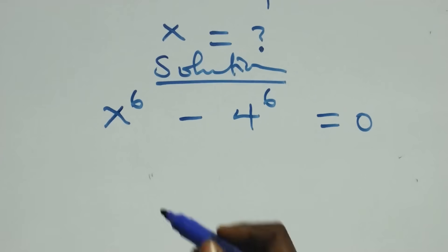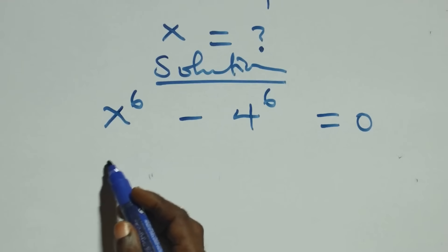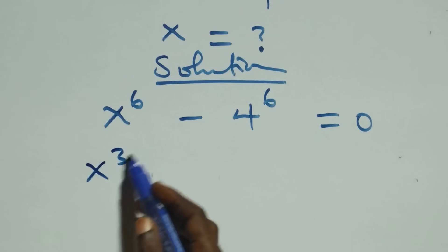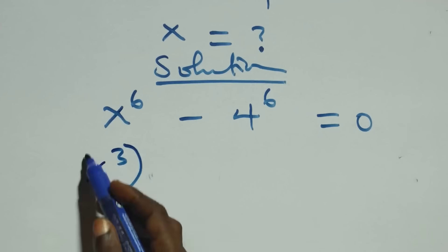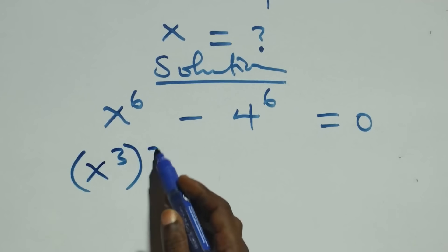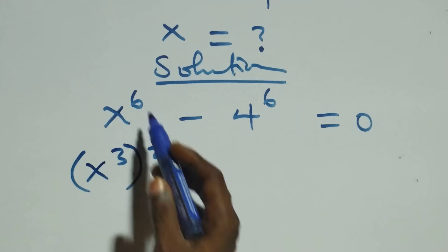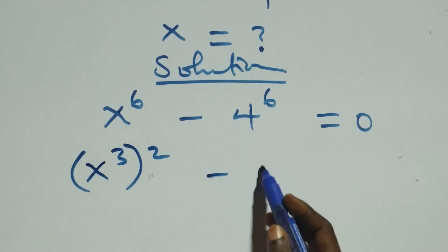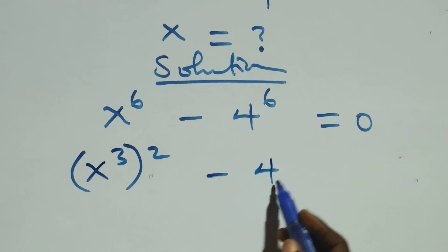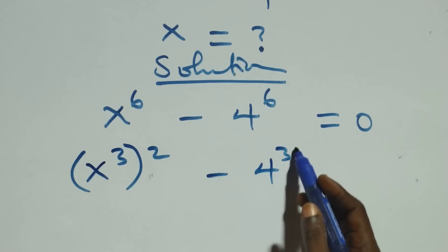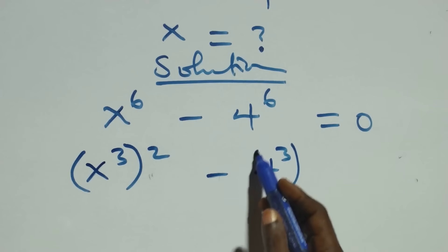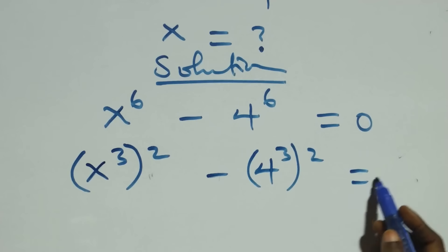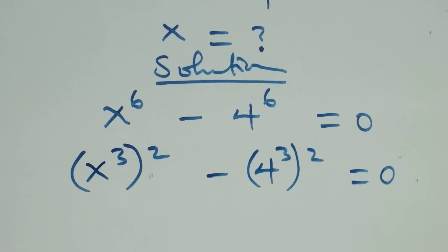At the next step, we can write this as x raised to power three, whole raised to power two — that is two times three equals six — then minus the same thing: four raised to power three, whole raised to power two, equals zero.